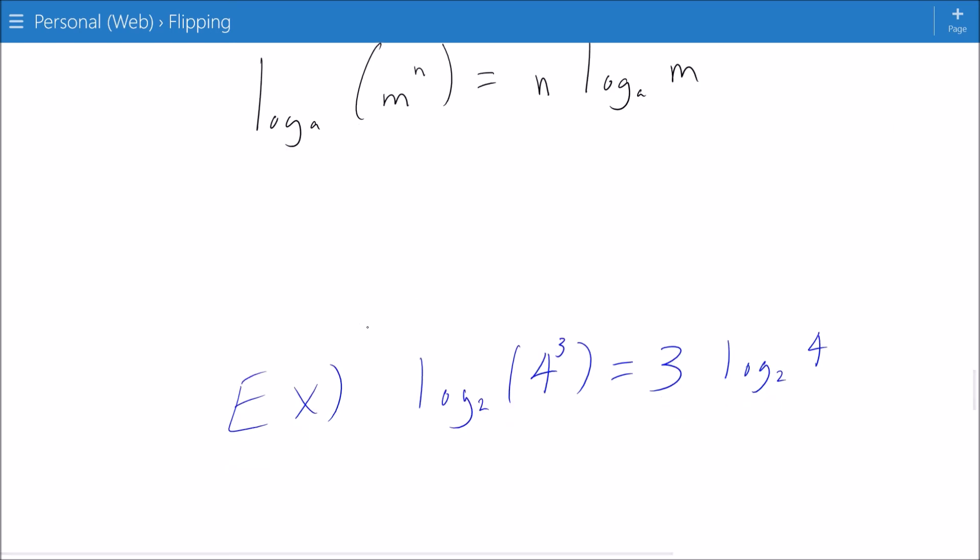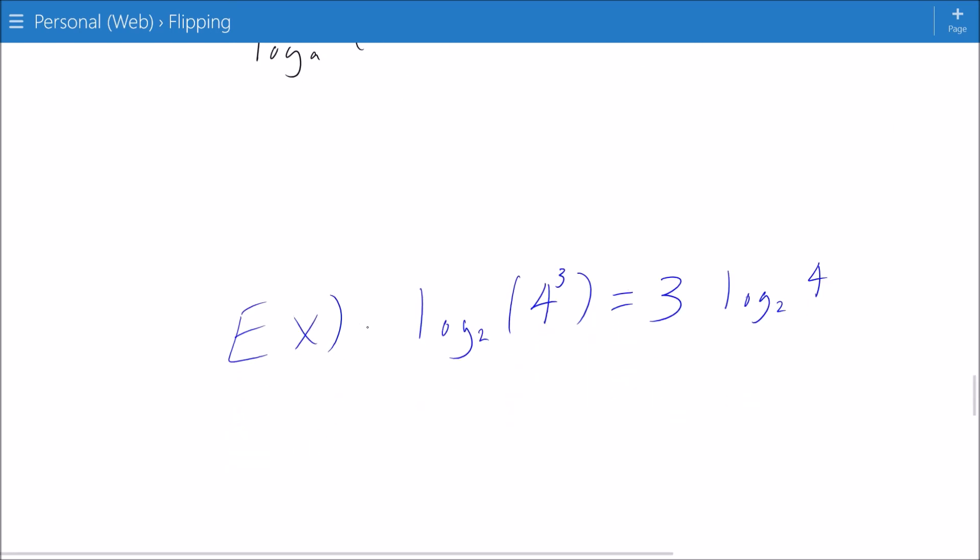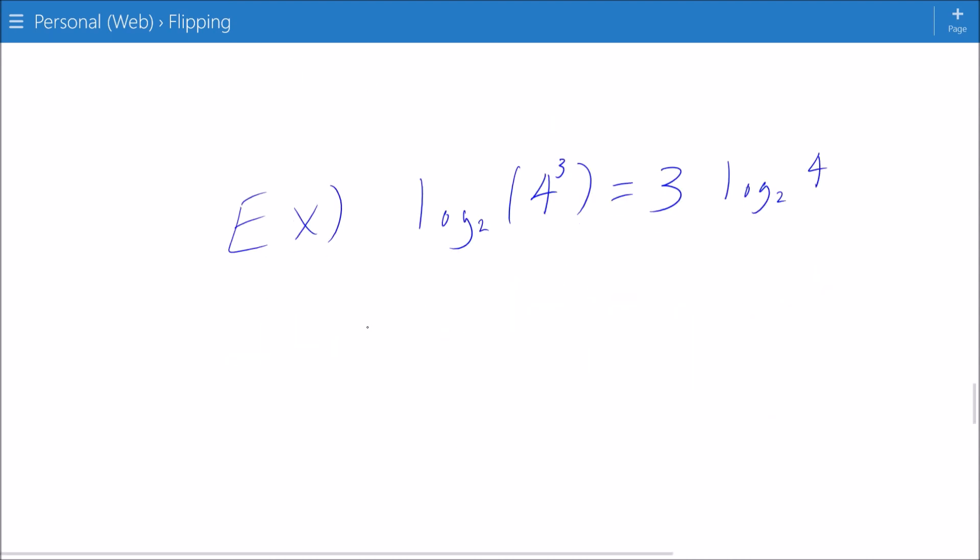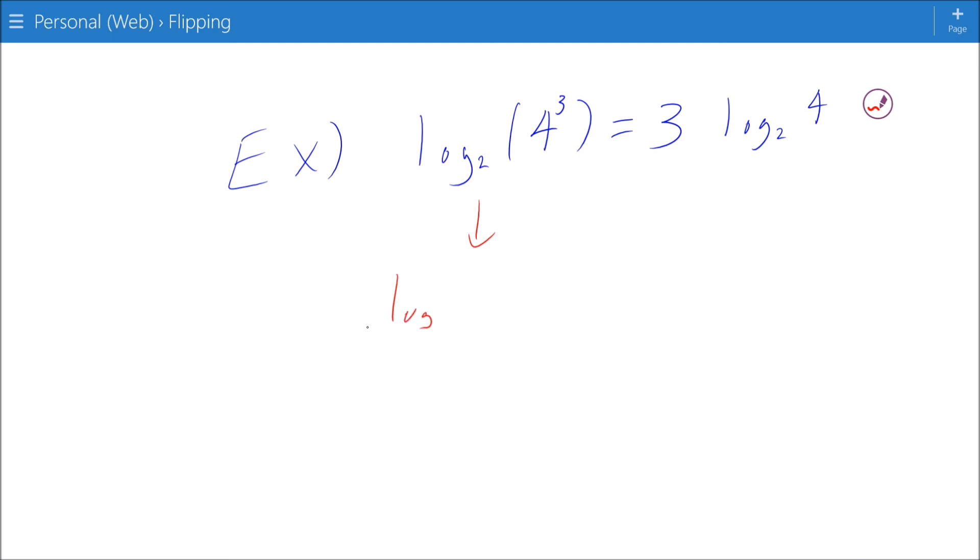Let's take a look at an example here. So if this is true, I should have log base 2 of 4 to the 3rd is equal to 3 times log base 2 of 4. Break this down. 4 to the 3rd is equal to... 4 squared is 16. 4 to the 3rd therefore is 64.